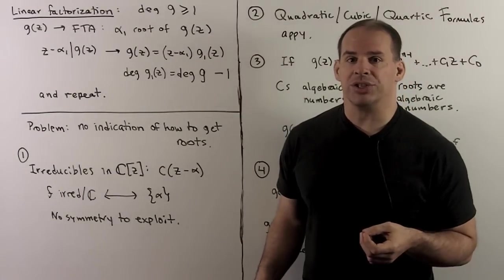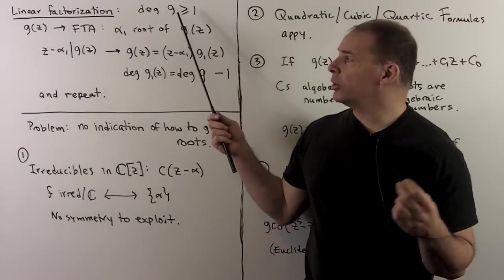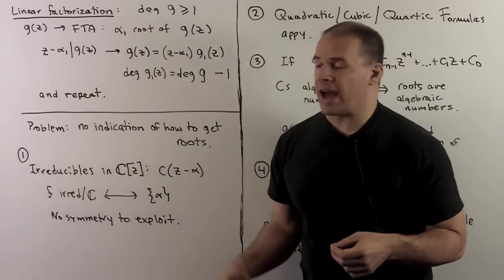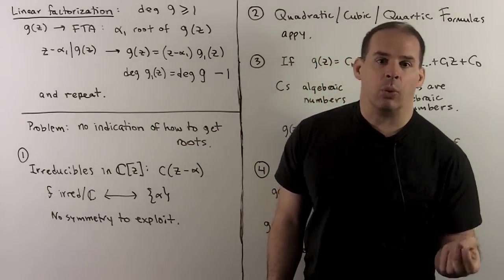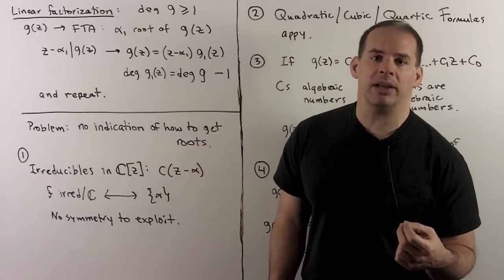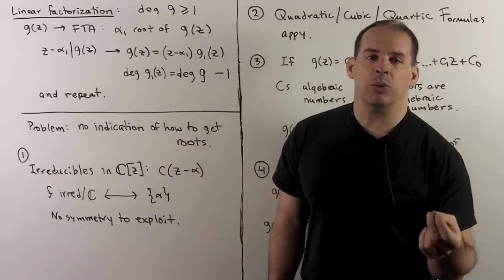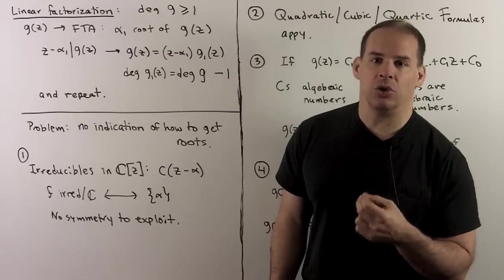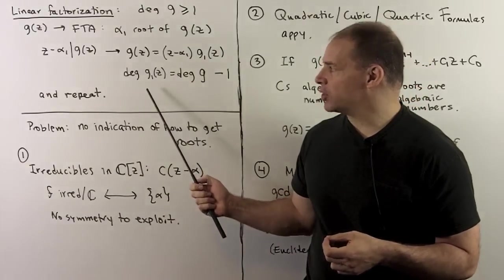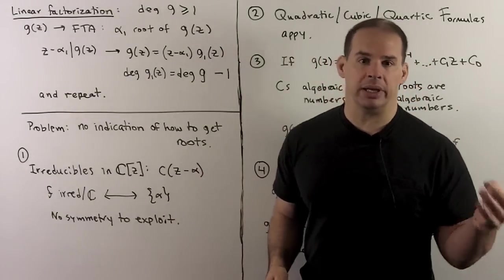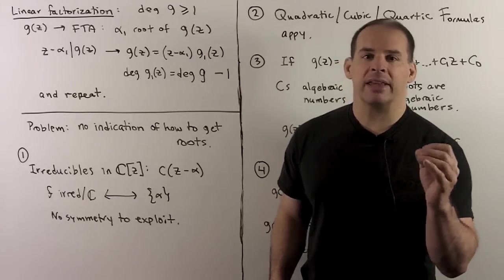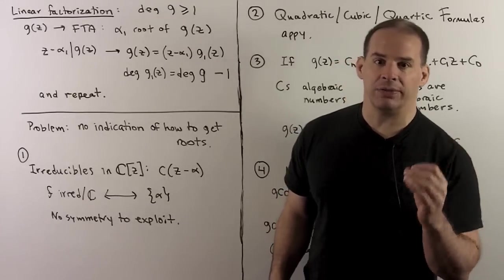To get the linear factorization, pick a non-constant polynomial g. By the Fundamental Theorem of Algebra, g has a root α₁, so (z − α₁) divides g, giving g = (z − α₁)·g₁, where g₁ has degree one less than g. We apply the Fundamental Theorem of Algebra to g₁ and keep repeating. Eventually we get down to a constant factor, giving a full factorization into linear factors.